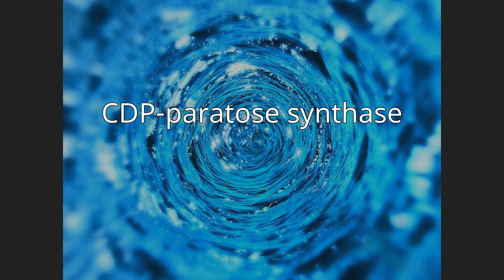CDP-paritose synthase, EC 1.1.1.342. The RBS gene is an enzyme with the systematic name CDP-alpha-D-paritose, NAD+ 4-oxidoreductase.